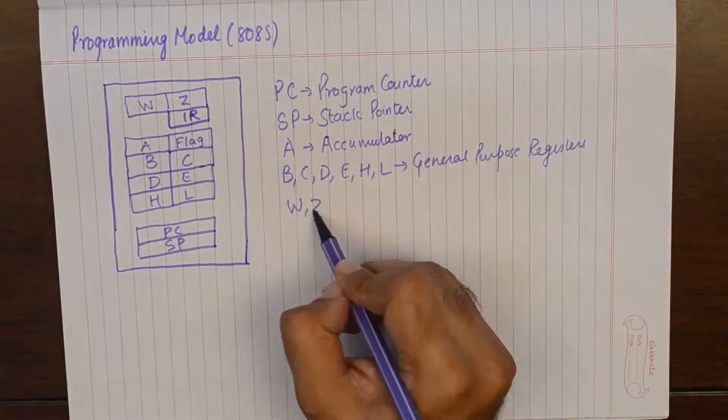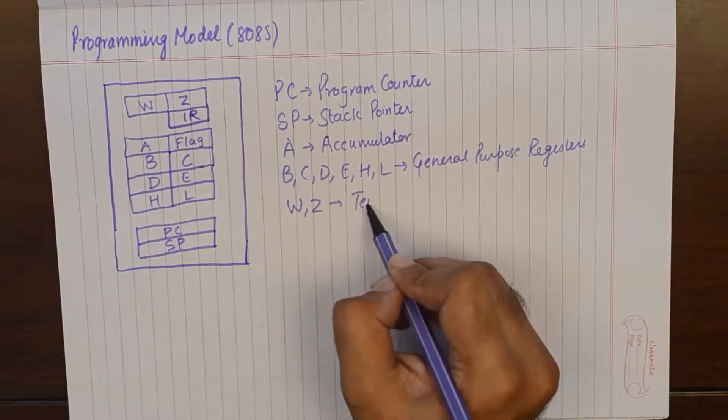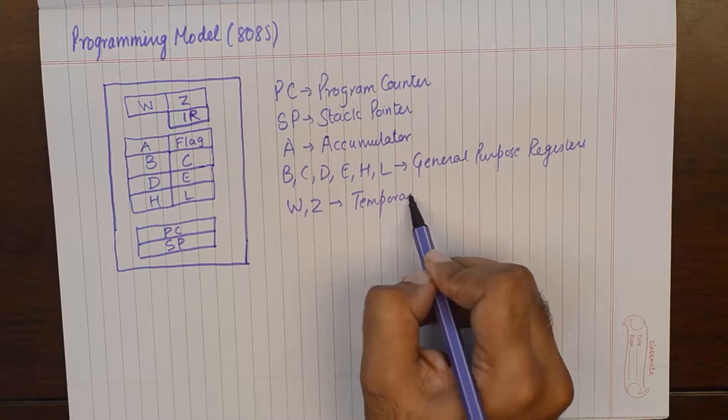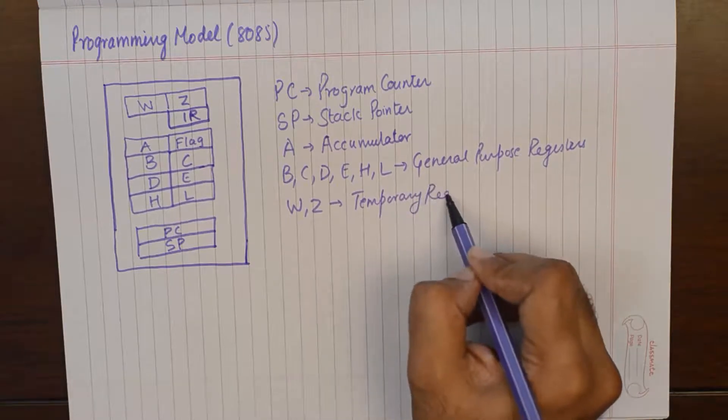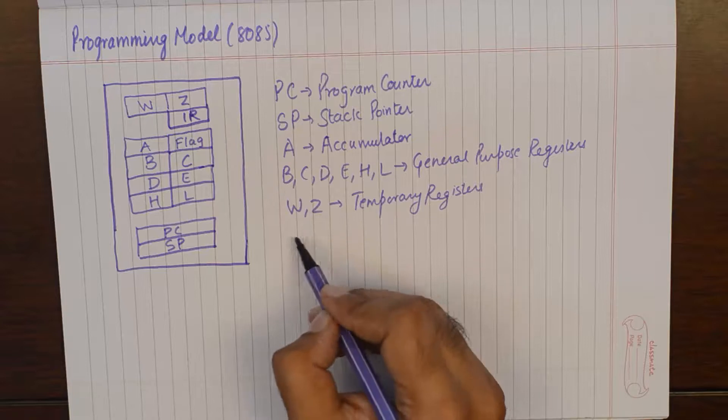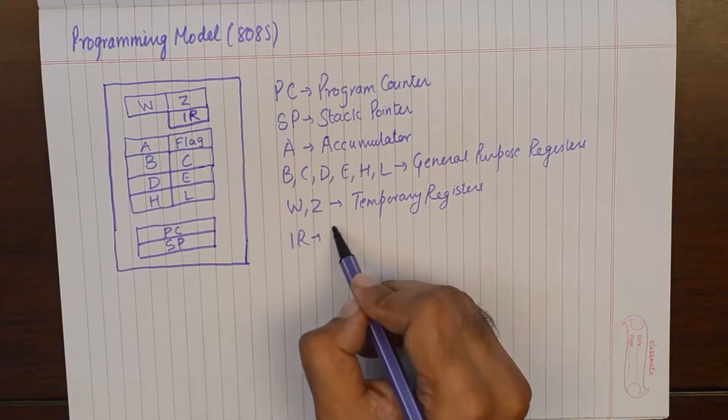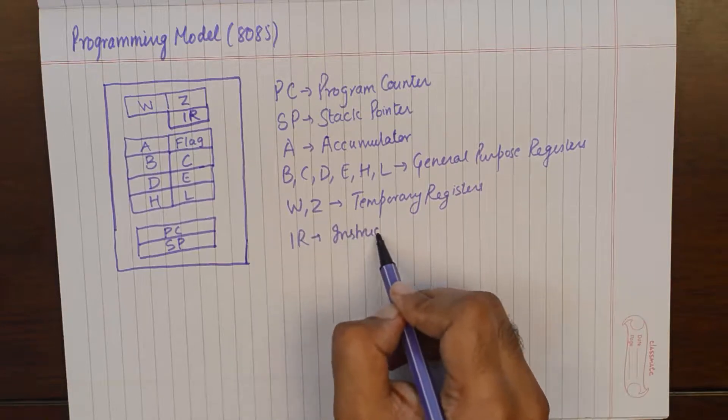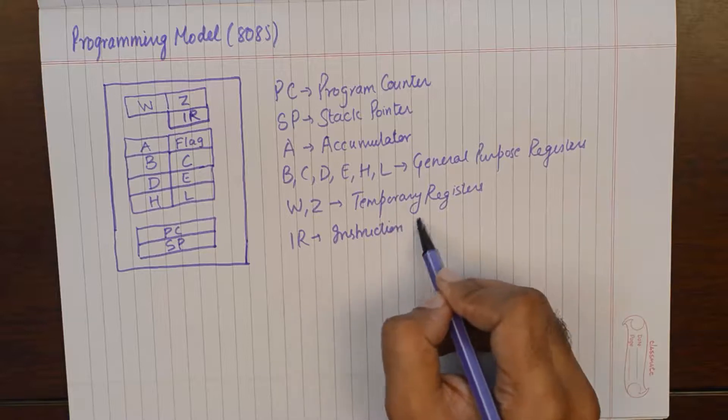W and Z are Temporary Registers. IR is Instruction Register.